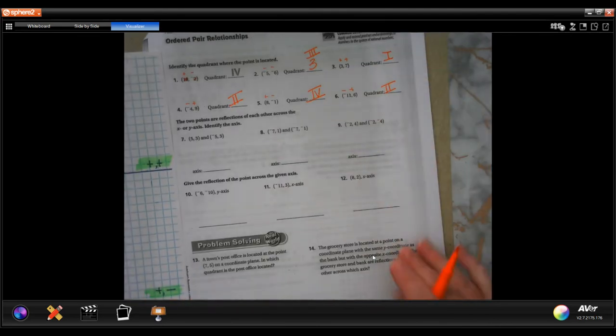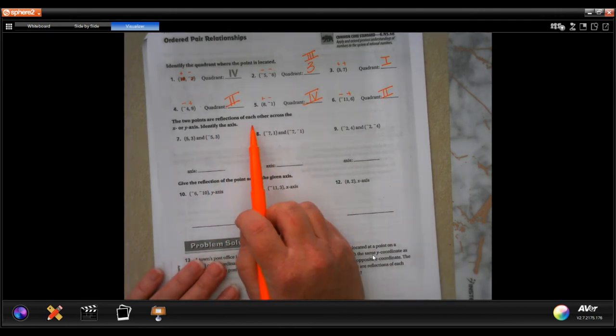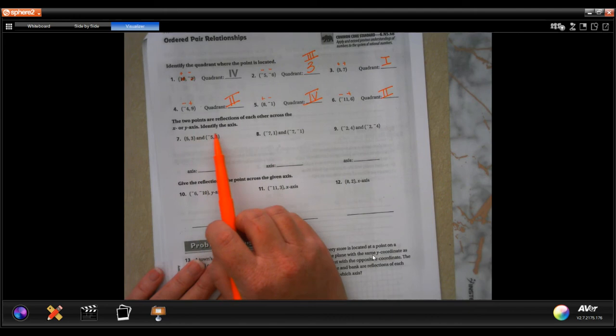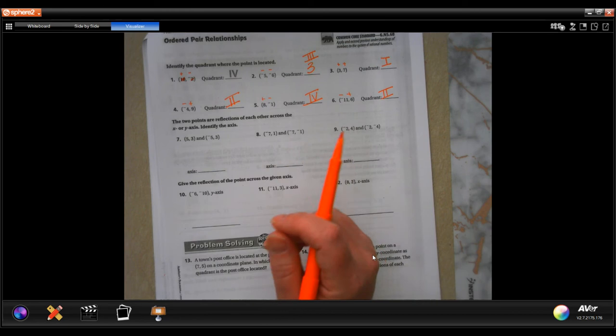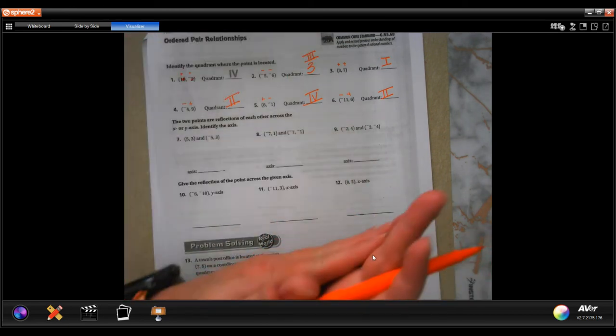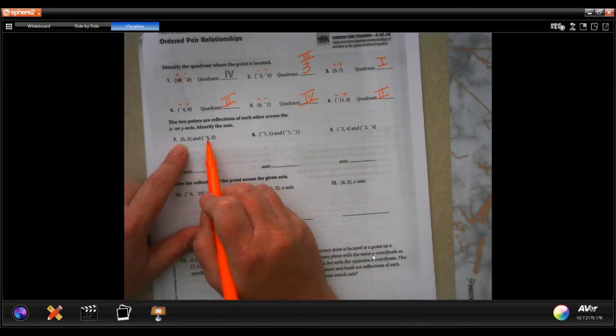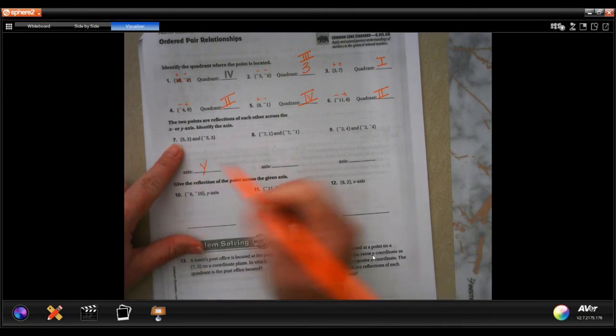Now this says the two points are reflected of each other across the x or y axis, so identify the axis. This one means that if I folded it, top to bottom, we need to decide which axis it is. The ones that are opposite are the x axis, but that means it's reflected on the y axis.